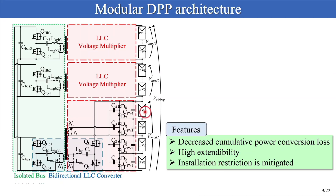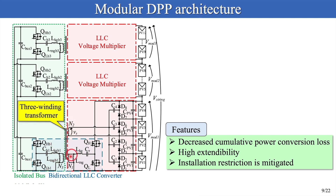Proposed architecture. In this presentation, I will propose a modular DPP architecture utilizing an isolated path. As an example, the left-hand figure shows the proposed modular DPP architecture for three modules, each containing four panels. The circuit highlighted in red is the LLC voltage multiplier, the blue part is the bidirectional LLC converter, and the green part is the isolated path. The LLC voltage multiplier operates as a module-to-panel DPP converter, and the bidirectional LLC converter operates as a module-to-module DPP converter. These converters are integrated using a three-winding transformer. The primary winding is tied to the resonant capacitor, the secondary winding is connected to the coupling capacitors and the midpoint of each module, and the tertiary winding is connected to the blocking capacitors.